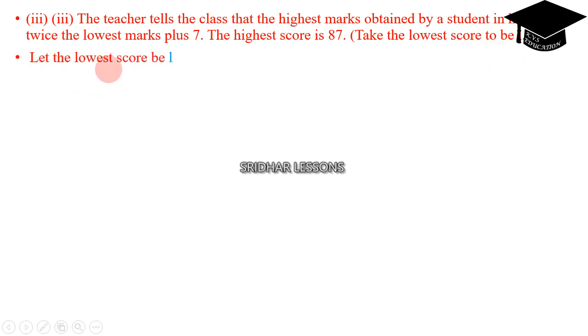Let the lowest score be L. Therefore, the highest score is twice the lowest mark, as was given, plus 7. So 2L plus 7 equals 87.